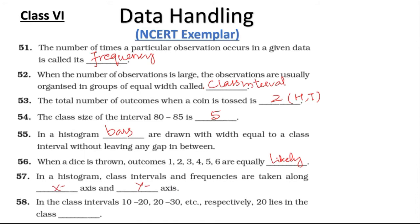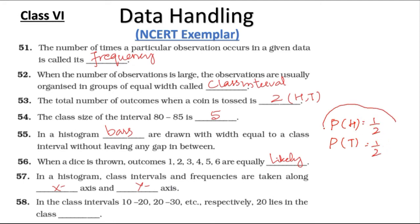Question 57: If there is only one outcome, it's called an equally likely outcome. For example, the probability of getting heads and the probability of getting tails — in both cases we get 1 by 2 as probability. This type of event is known as an equally likely event.